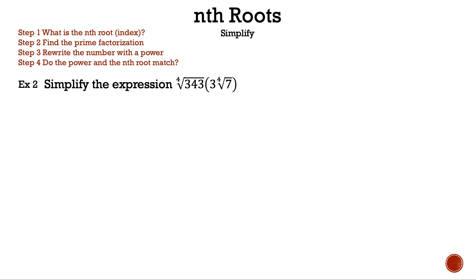Now let's read the question for example two. Simplify the expression: the fourth root of 343 times the quantity of three times the fourth root of seven. First, let's write down the fourth root of 343 times three times the fourth root of seven. We could multiply 343 and seven since they have the same index, but we don't want to because that will be a big number, and since we're simplifying, we want to keep the number small.